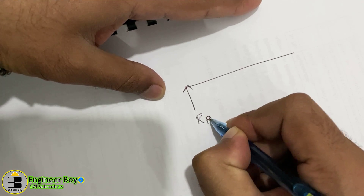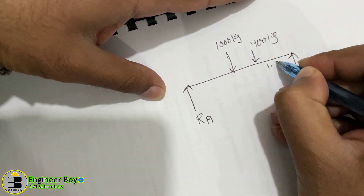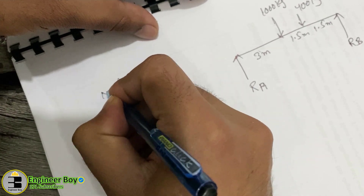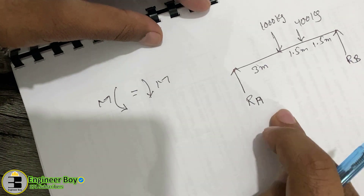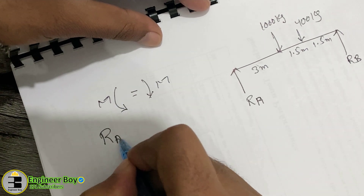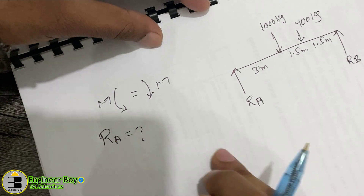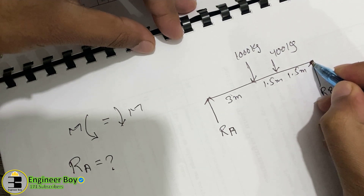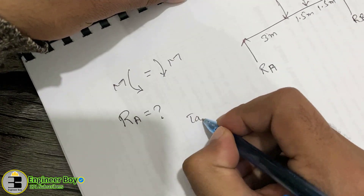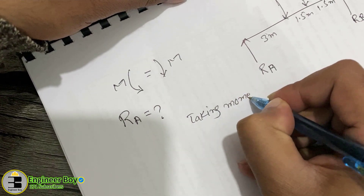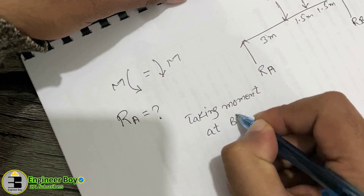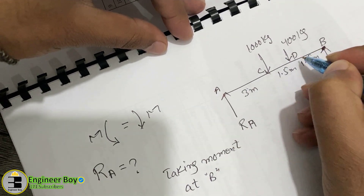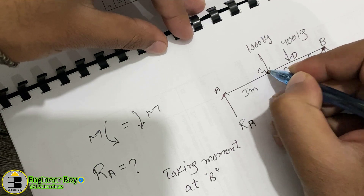Now let's work on a clean page. For equilibrium, clockwise moment equals anti-clockwise moment. To determine RA, we take the moment at point B. This eliminates RB from the equation since it acts at that point.